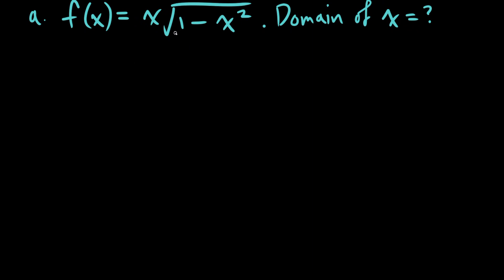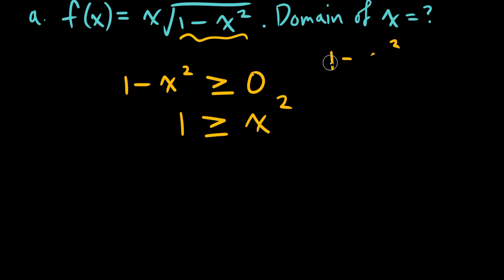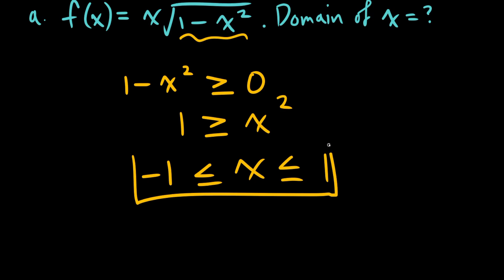The third question requires us to analyze this function and find the domain of x. Since we have a square root here, we know the square root is only valid, or only has real solutions, when it is not less than 0. It can be equal to 0, resulting in the square root of 0, which is 0, but it cannot be negative or it would result in complex numbers. So 1 minus x squared has to be greater than or equal to 0. Moving things over: 1 is greater than or equal to x squared. Since this isn't an equation, we represent this with an inequality on both sides, giving us negative 1 less than or equal to x less than or equal to 1. That is the domain of our function.